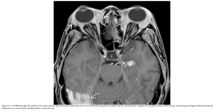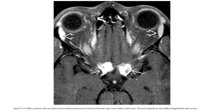Enhancing meningeal and parenchymal infiltrate nodules intracranially. And this is the Axial T1 C-plus fat-saturated MR in the patient with sarcoidosis showing marked enhancement of the pre-chiasmatic optic nerve. The lacrimal glands are also mildly enlarged.